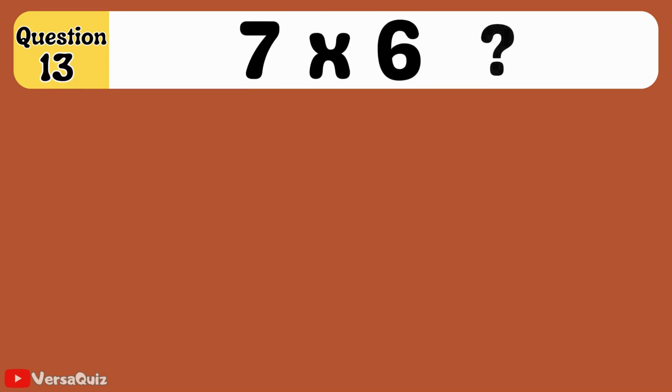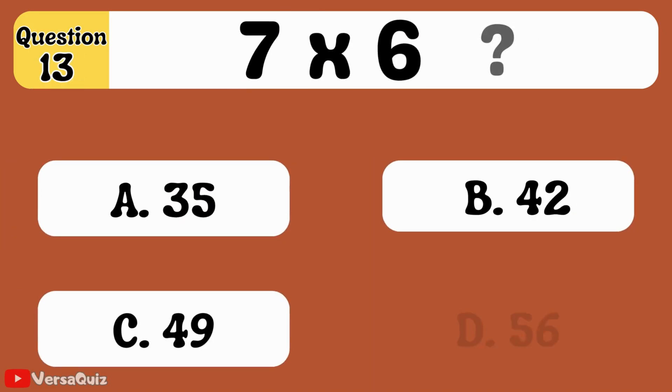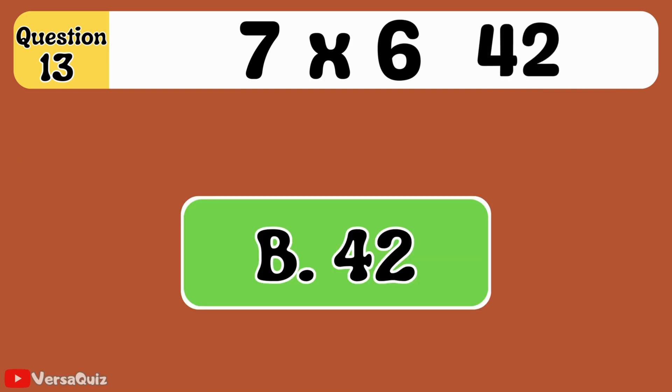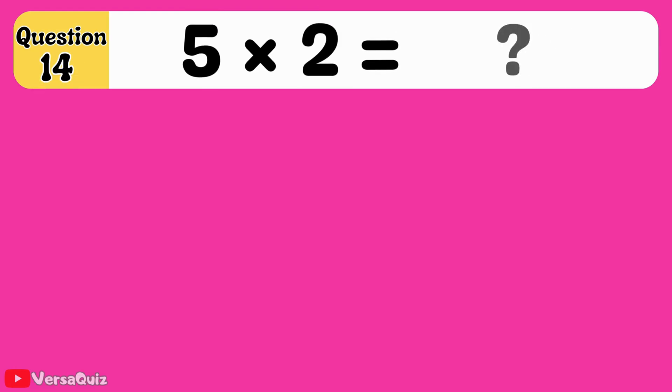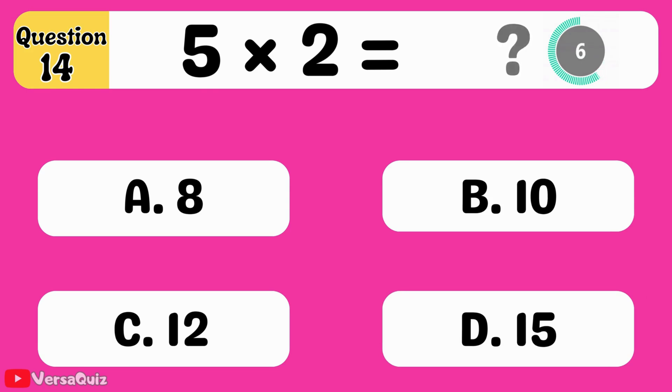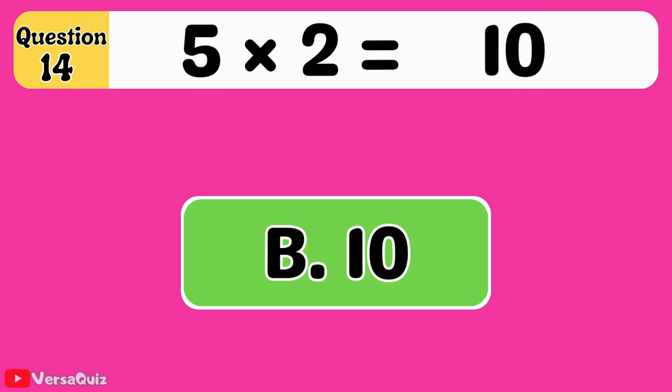What is 7 times 6? 42. 7 times 6 equals 42. Multiply 5 by 2. How much do you get? 10. 5 multiplied by 2 equals 10.